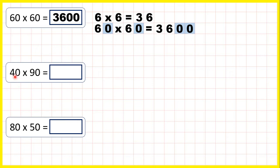Now for 40 times 90, we know that 4 times 9 is 36. So 40 times 90 is 3,600. Because we do 4 times 9,